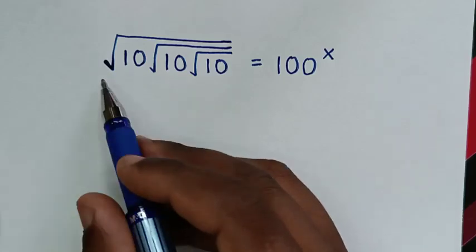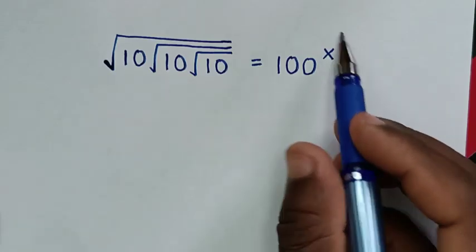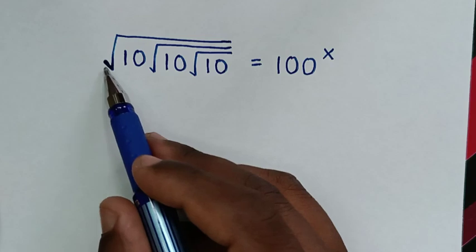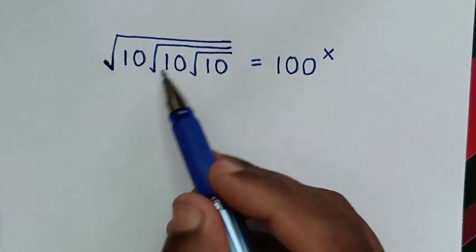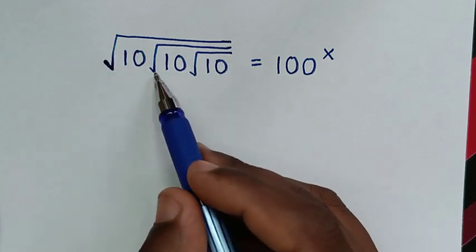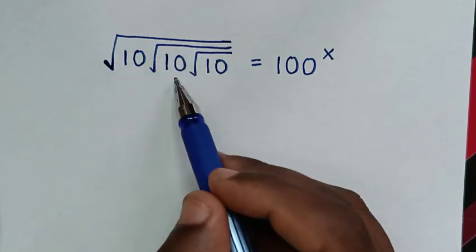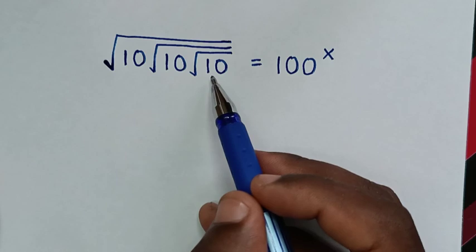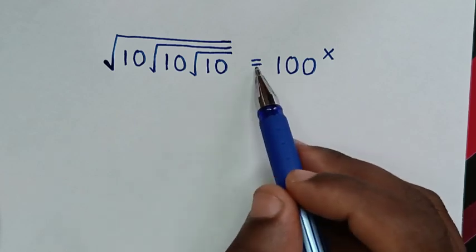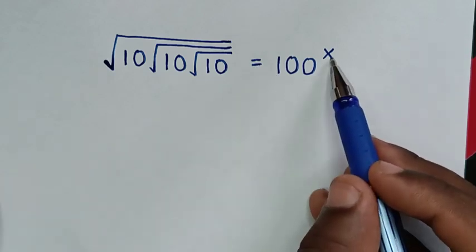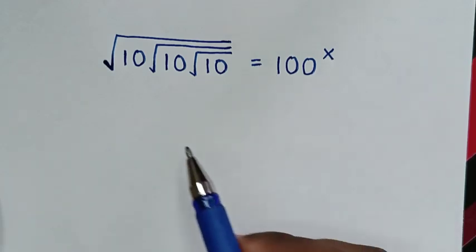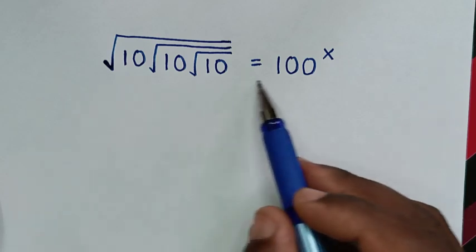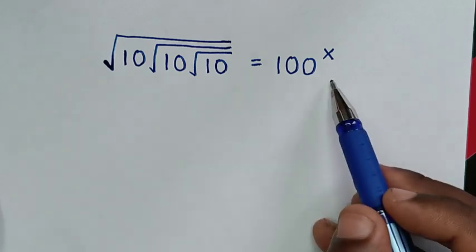Hello, you are welcome to solve this math problem, which is: square root of 10 under square root of 10 under square root of 10, is equal to 100 power of x. We need to find the value of x from this equation.